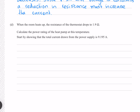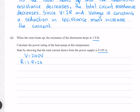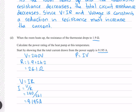When the room heats up the resistance of the thermostat drops to 1.9 ohms. Calculate the power rating of the heat pump at this temperature. First, show that the total current drawn from the power supply is 9.195 amps. Our voltage is 240 volts; our total resistance is the thermostat's 1.9 ohms plus the heat pump's 24.2 ohms in series, giving a total resistance of 26.1 ohms. Using V = IR and solving for current by dividing both sides by resistance gives 9.195 amps.